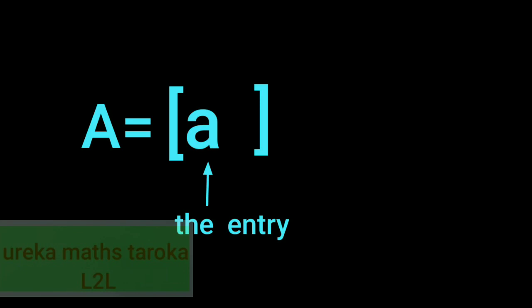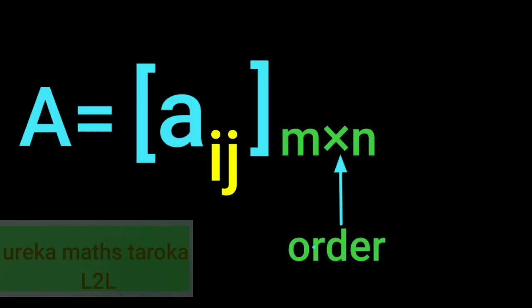Next, row column number, order. M by N. M by N. M is the row number, and N is the column number.